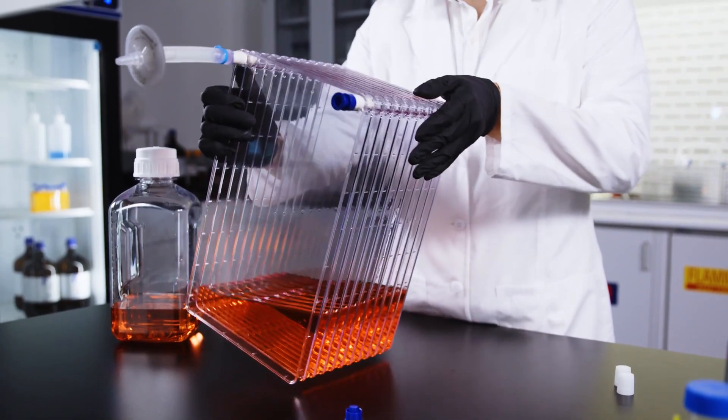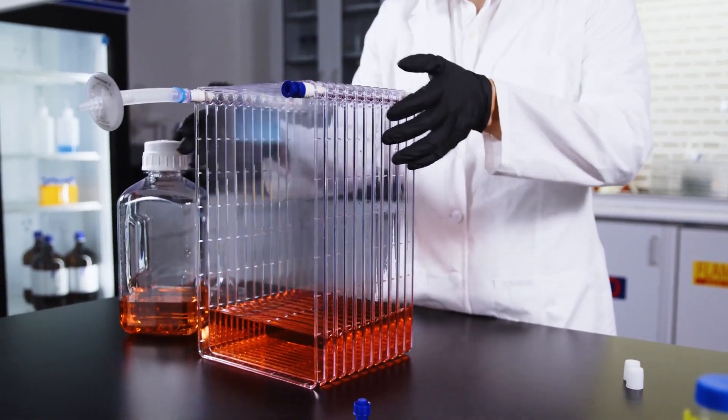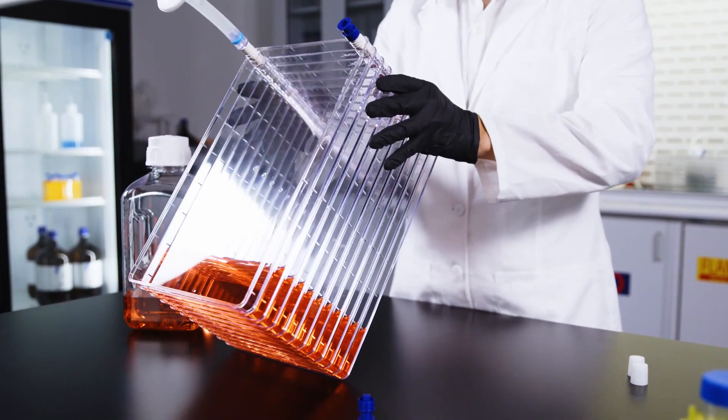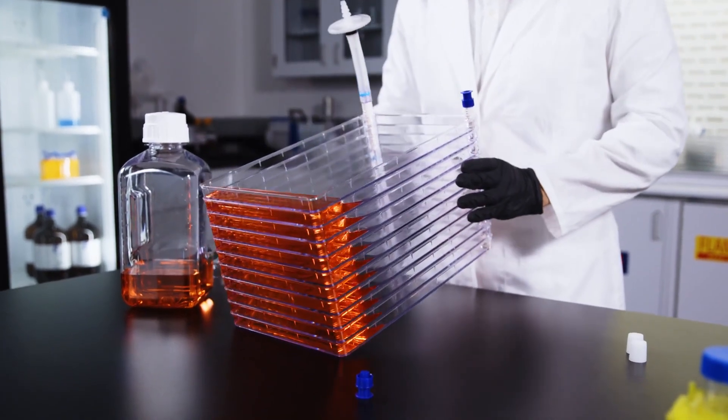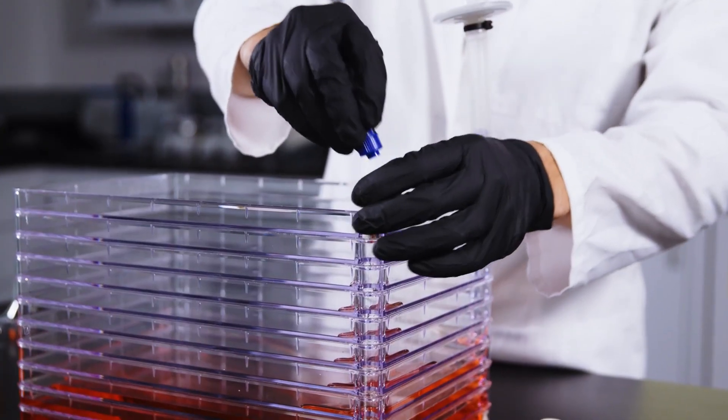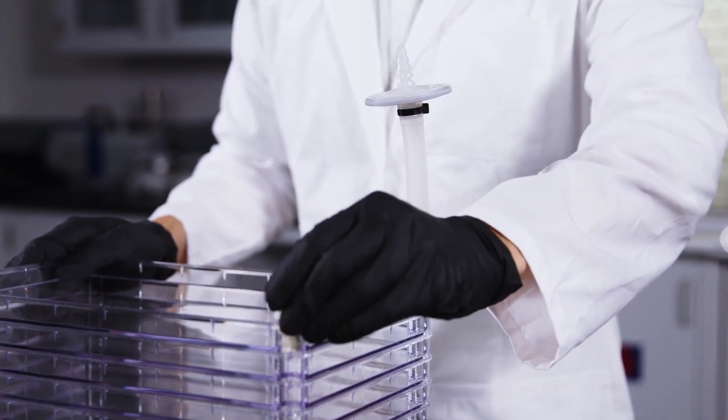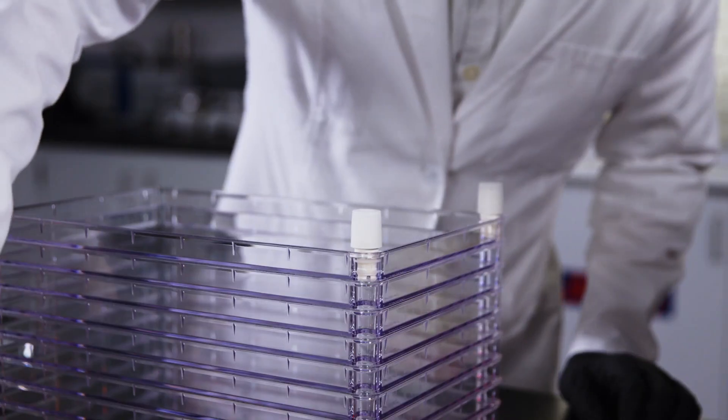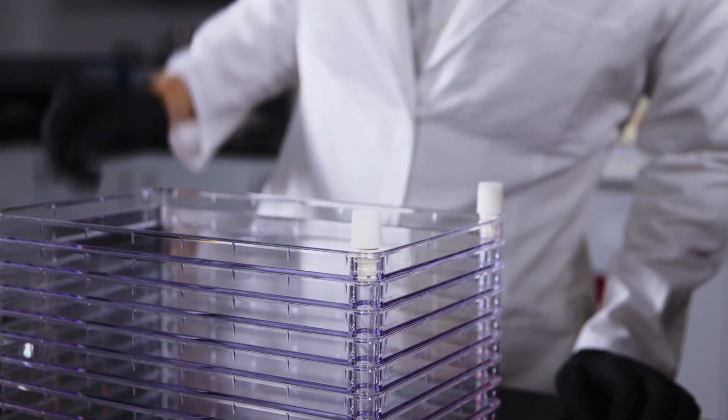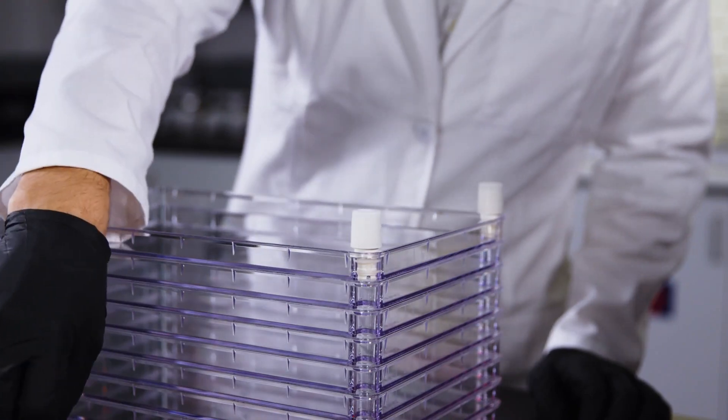Once the medium has fully leveled out, turn the NUNC cell factory system on its short side with the ports facing upright. Take off the blue cap and screw on the white filter cap or secondary venting filter. Make sure all white caps are screwed on securely. You may then move the cell factory system to an incubator.